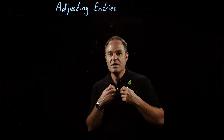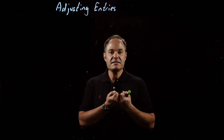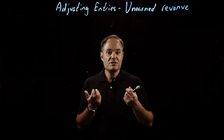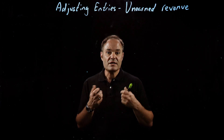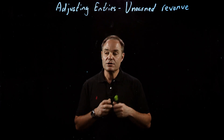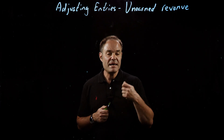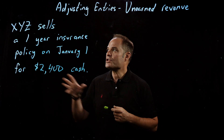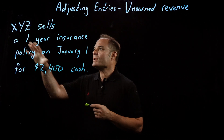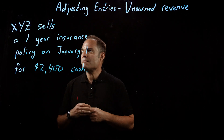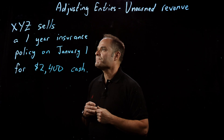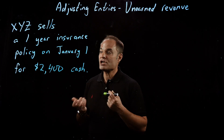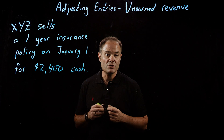What happens in reverse? What if a company sells something and gets paid in advance for it? In our last example, we used an insurance contract and said that a company purchased a one-year insurance contract and paid for it in advance on January 1st. Here we'll look at the opposite — we have XYZ Insurance Company, and they sell a one-year insurance policy on January 1st for $2,400 cash.